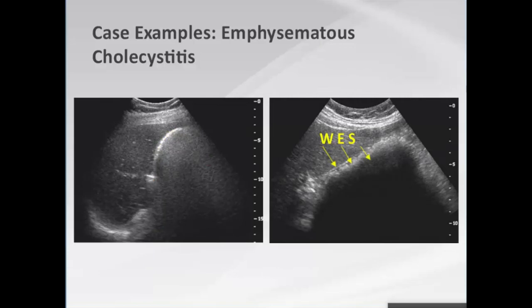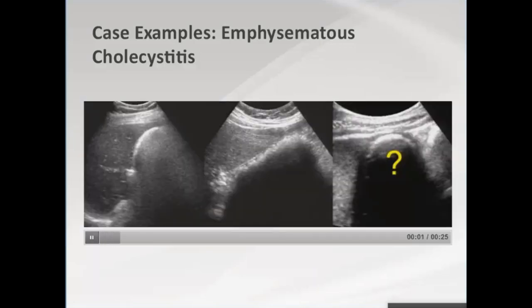How does emphysematous cholecystitis differ from a gallbladder packed full of stones? Often the latter patient won't be acutely unwell. From an imaging perspective, in emphysematous cholecystitis we can see the gallbladder wall as a very thin, smooth, echogenic line, then a second irregular acoustic interface — the front edge of stones filling the lumen — with a very clean, dark shadow from the calcified stones. This is the wall-echo-shadow sign, or WES sign.